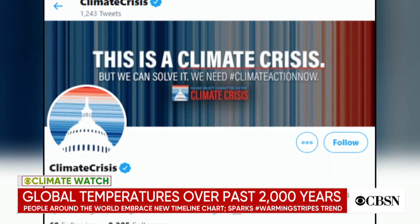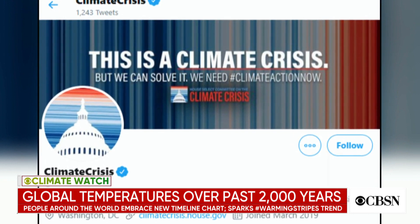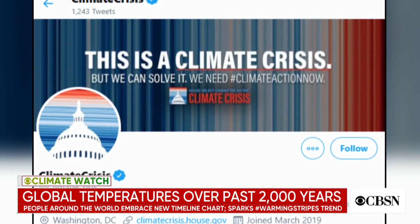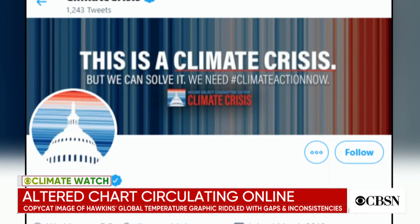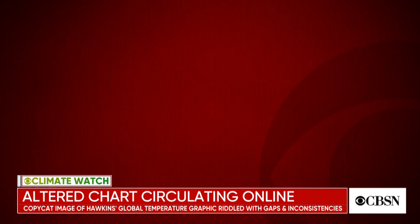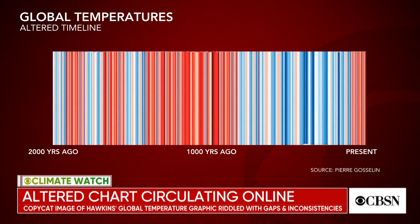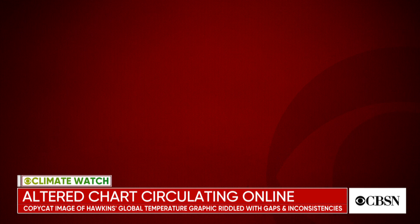There are naysayers out there about climate change, and someone has put together an alternative image. It's becoming a problem already. What they've done is excluded the last 15 years of temperatures, and by doing that it shifts the whole scale — it makes the medieval warm period seem even warmer. If you look closely at the edges of this image, it's not even clear they used real data. If you zoom in at the very top, it looks discombobulated. So it's very possible this is simply photoshopped.